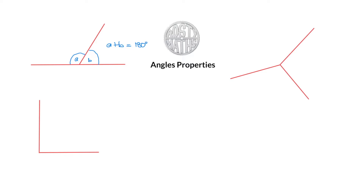Next we've got angles around a point — here is the point right here. If I make some angles around this point, they form a full circle, and angles around a point add up to 360 degrees. So A plus B plus C equals 360 degrees. We will use all of this in a little bit — we're just getting through the key facts at the start.